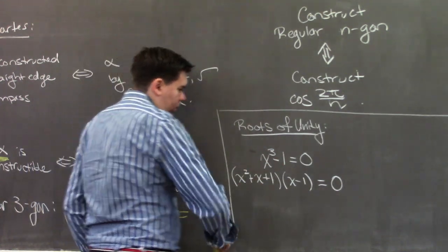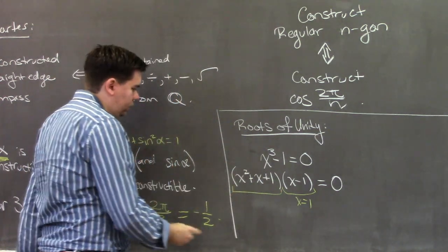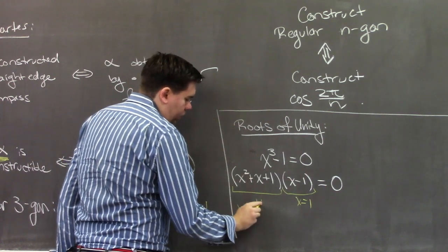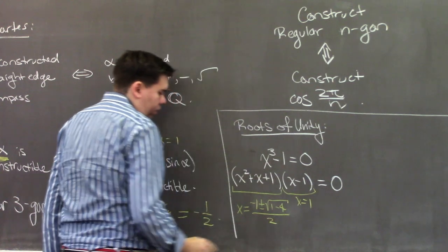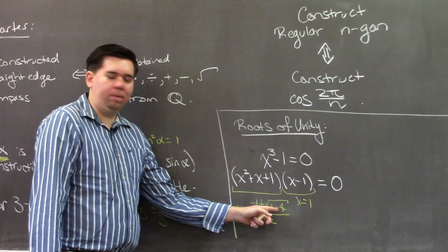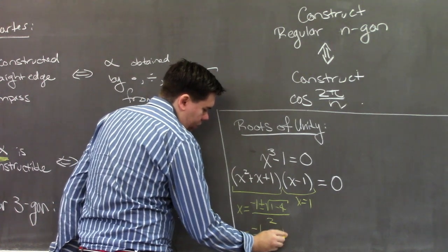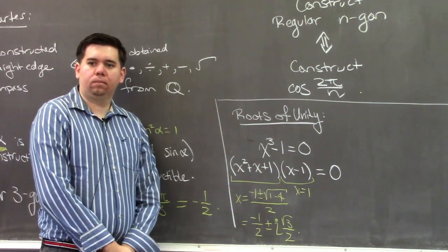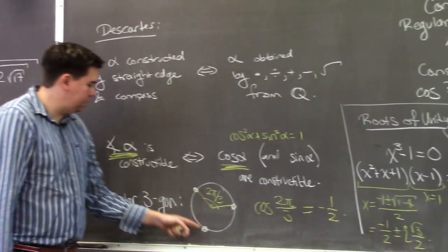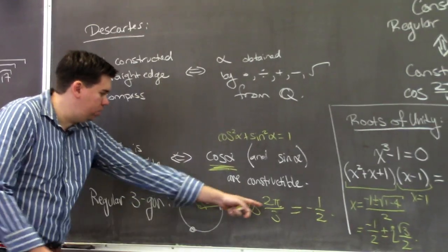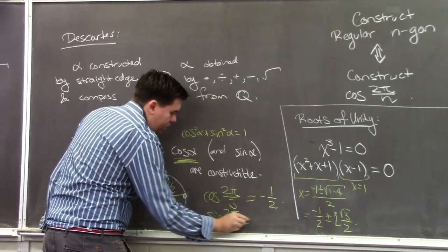Applying the quadratic formula to x² + x + 1 = 0 gives x = (−1 ± √(1 − 4)) / 2, which involves √(−3), giving imaginary roots: x = −1/2 ± i√3/2. But these numbers are familiar! Cosine of 2π/3 is −1/2 and sine of 2π/3 is √3/2. So there seems to be some relationship between the cosine of this angle and our roots.